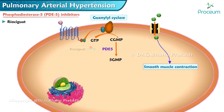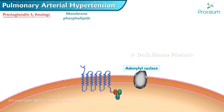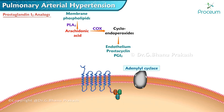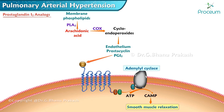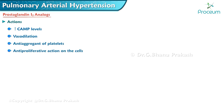Riociguat is also a phosphodiesterase 5 inhibitor with guanylate cyclase stimulator efficiency, causing an increase in cyclic guanosine monophosphate and vasodilation; syncope is a common side effect. Prostaglandin I2 is produced from endothelial cells of the vasculature and is associated with vasodilation via the cyclic adenosine monophosphate pathway. Analogues are used in clinical practice to increase cyclic AMP levels and also have anti-platelet aggregant and anti-proliferative actions. They are considered the most effective drugs for the treatment of pulmonary hypertension.